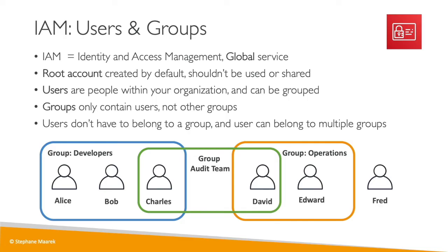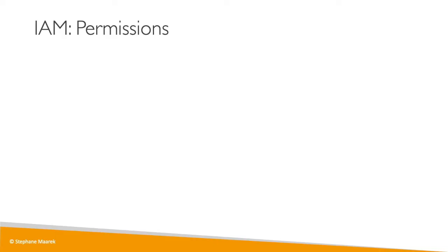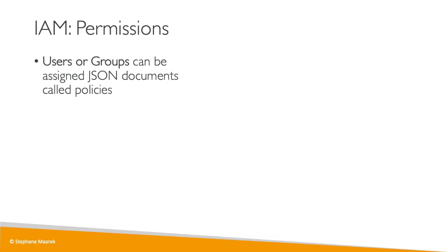So this is the possible configuration for IAM. Why do we create users and groups? Because we want to allow them to use our AWS accounts, and to do so we have to give them permissions. Users and groups can be assigned what's called a JSON document called a policy — an IAM policy.